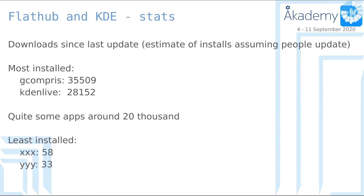Some stats — as you can see, the numbers are not very big. The most installed one is GCompris with 35,000 downloads since the last update. It's not a lot, but it's not too bad either. There are some apps that are almost not installed — they're very niche and development apps, so that's also understandable.